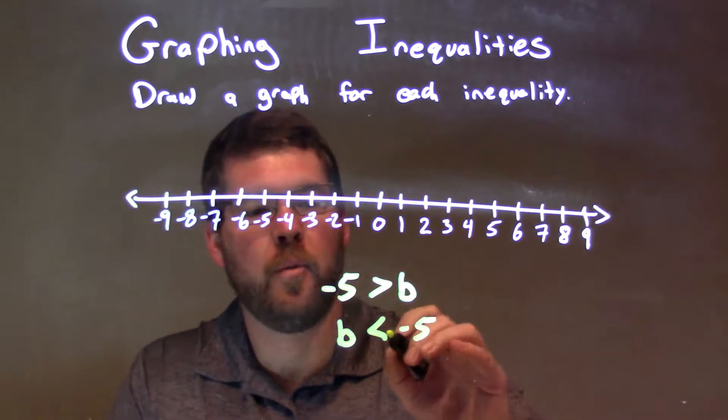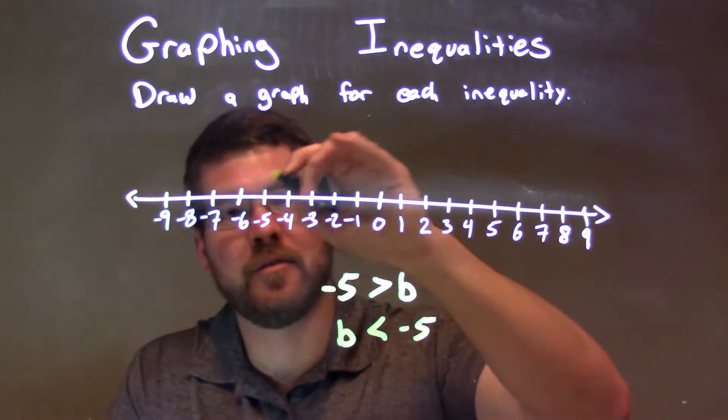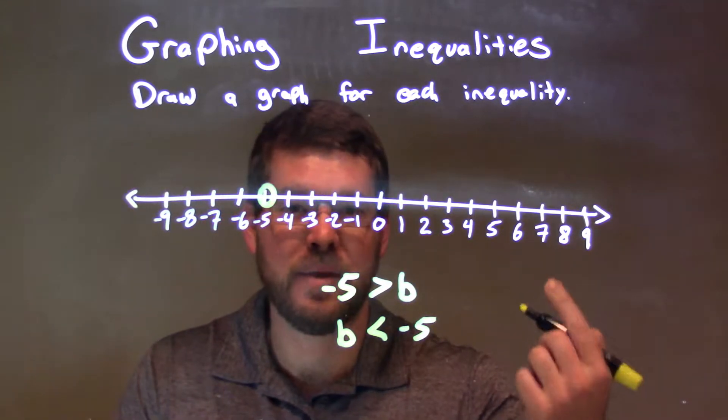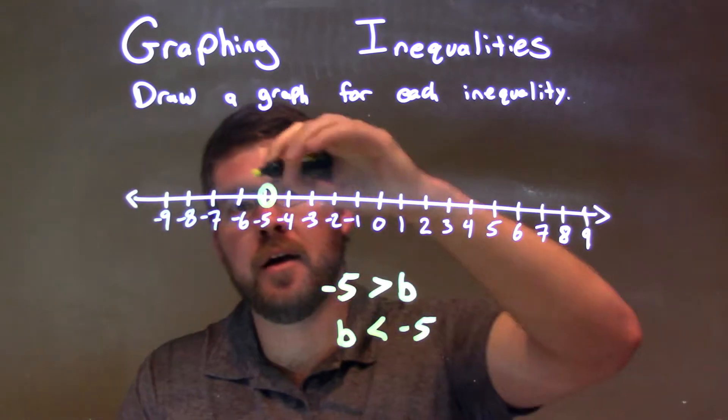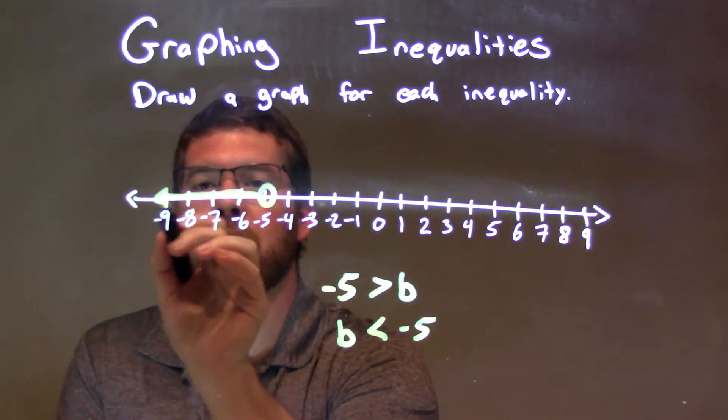So we start at negative 5 here. We have an open circle because it is not equal to negative 5. Then, since b is less than negative 5, we shade to the left. And there we have our graph that matches our inequality.